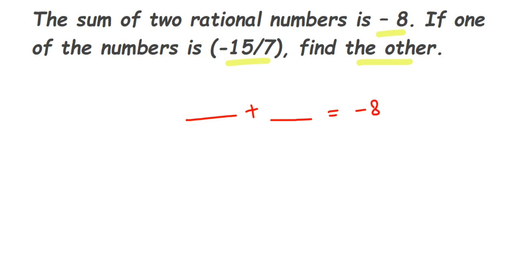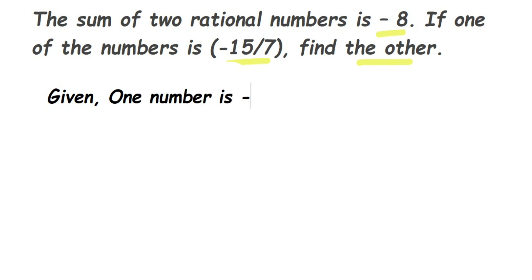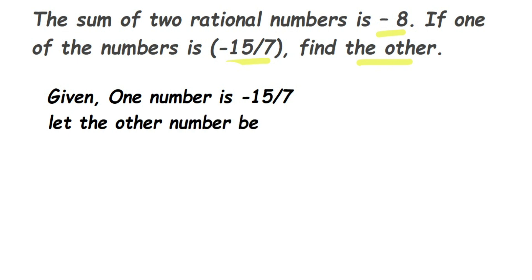We have been given one number which is -15/7 and we have to find the other number. Since the other number is unknown, we're going to assume a variable. We'll take it as a variable X and then solve it. So let the other number be X — you can take any variable, it's completely up to you.